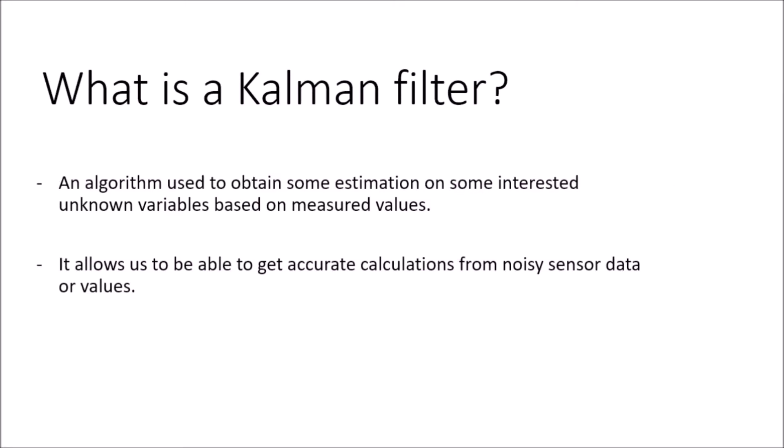What is a Kalman filter? A Kalman filter, or Kalman algorithm, is an algorithm used to obtain estimations on unknown or desired target variables in a system, based on measured values. It allows us to get accurate calculations or estimations based on noisy sensor data.